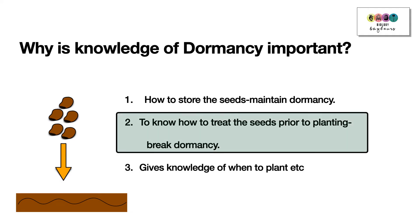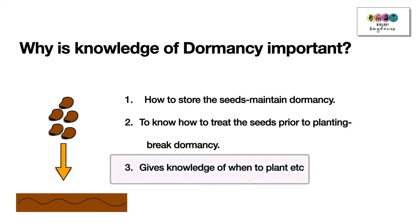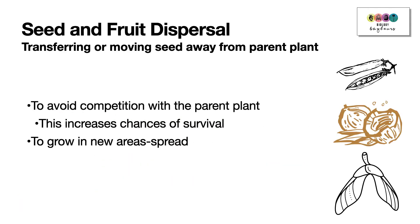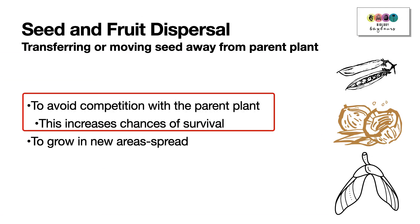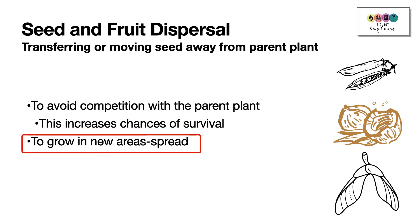After seed and fruit formation comes seed and fruit dispersal — transferring or moving the seed as far away from the parent plant as possible. This is really important because it avoids competition with the parent plant, giving the new plant a better chance of survival. It's also important for allowing the plant to colonise and grow in new areas.